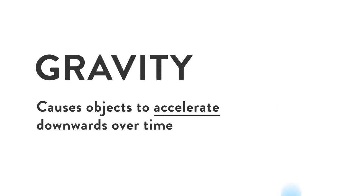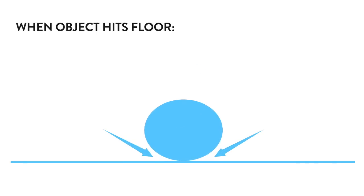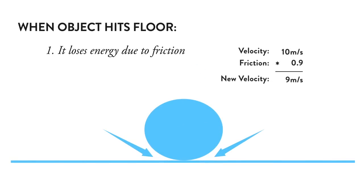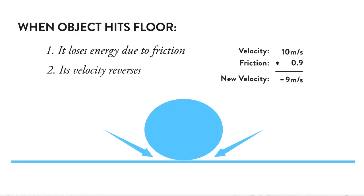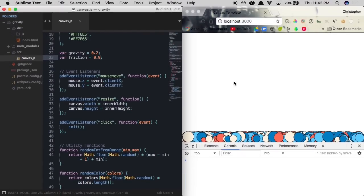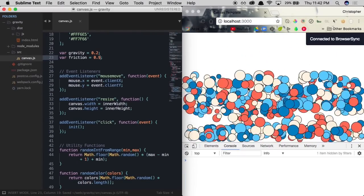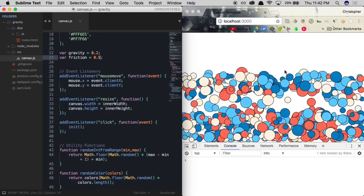So gravity is the constant downward force applied to objects' velocities over time. But to truly make a more realistic, intriguing physics simulation, we need to take into account what happens when a falling object hits the surface beneath it — the object will lose some of its energy due to friction, and the object's y-velocity reverses, causing it to travel in the opposite direction. With those concepts in mind, we should now be able to create a semi-realistic gravity simulation.